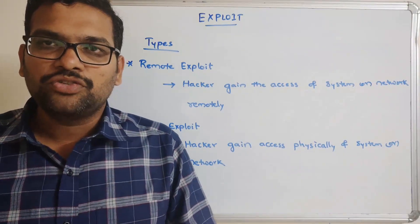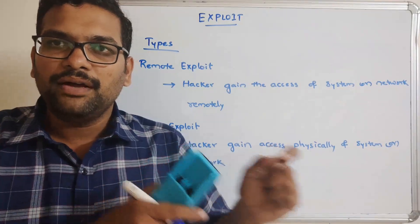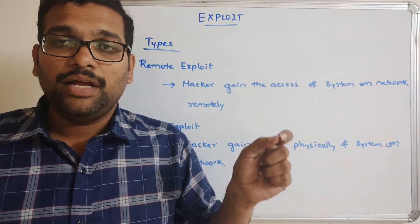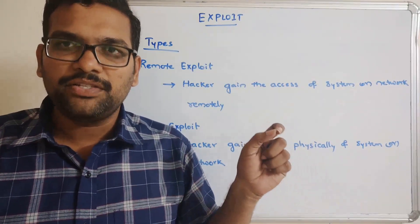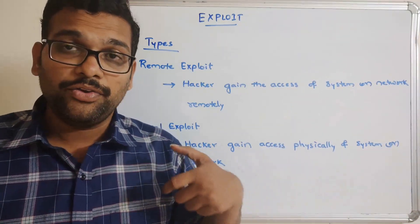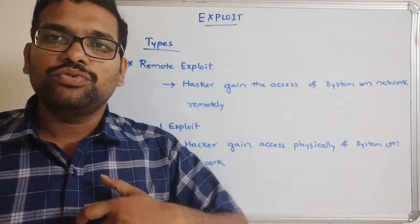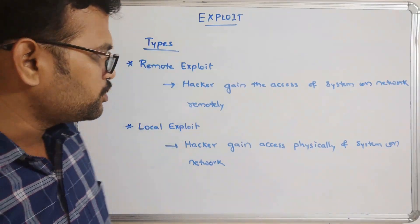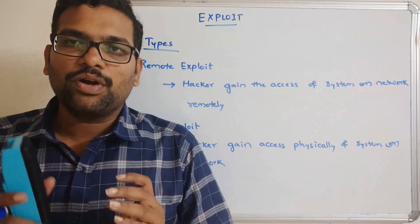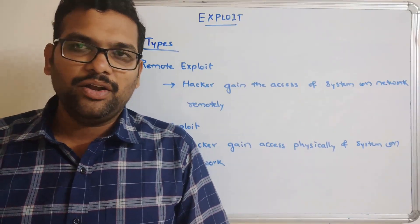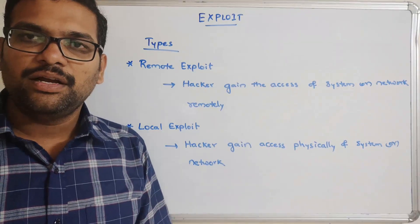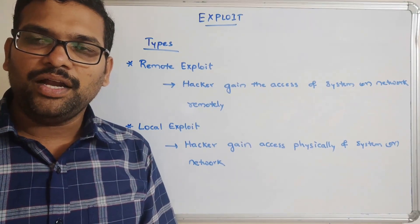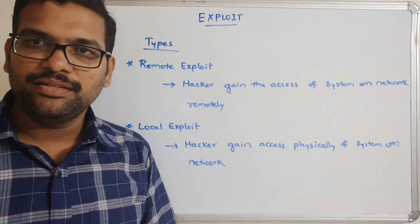Recalling the definitions: exploit is taking advantage of vulnerabilities available in the system, network, software, or hardware. Exploit is not malicious — it is a piece of code which takes advantage of vulnerabilities. It is used by hackers to send malicious code to the target or victim system. Hope you understood what is an exploit and what are the different types of exploit. Feel free to post your doubts in the comment section. If you enjoyed my session, like and share it with your friends, and don't forget to subscribe to our channel. Thank you very much.